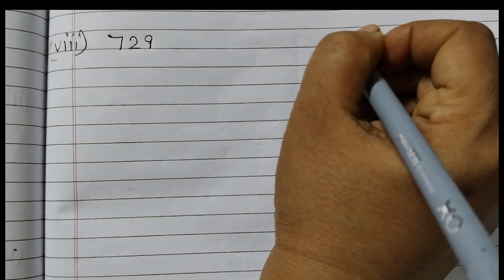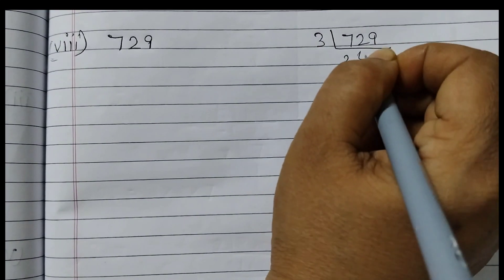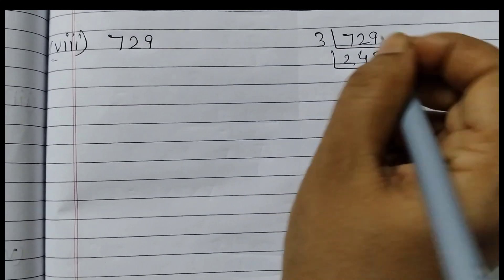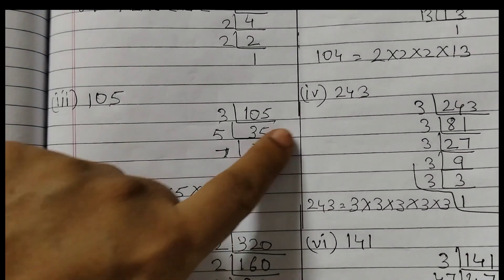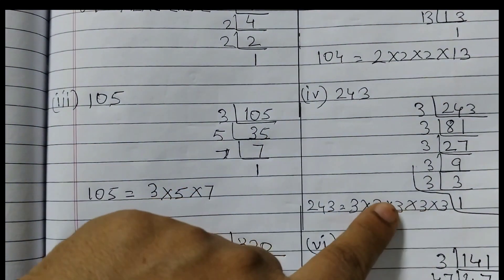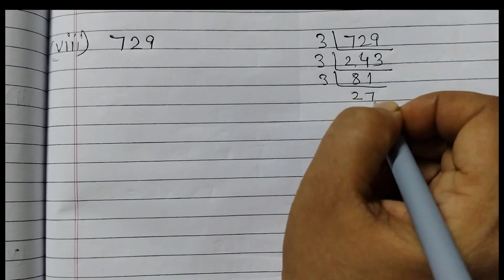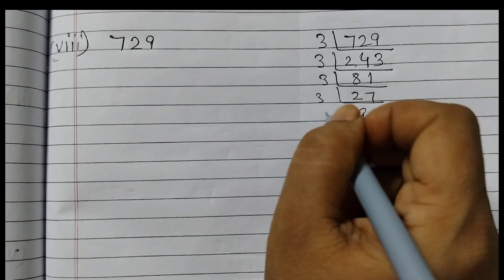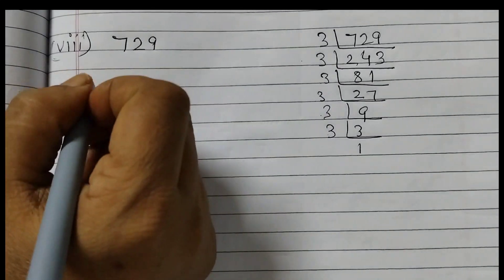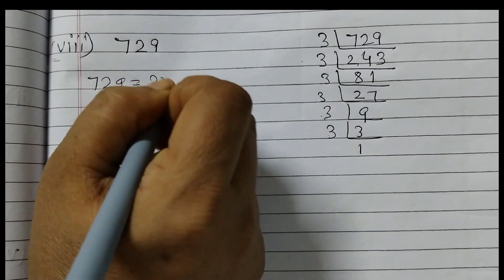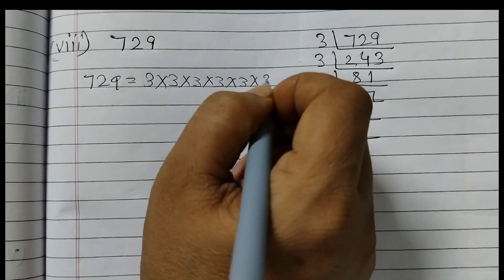Next one is 729. 729 will start with 3. We already did 243 — so 729 ÷ 3 = 243, and then same steps as before: 243 ÷ 3 = 81, 81 ÷ 3 = 27, 27 ÷ 3 = 9, 9 ÷ 3 = 3, 3 ÷ 3 = 1. So 1, 2, 3, 4, 5, 6 — 729 is equal to 3 written 6 times: 3 × 3 × 3 × 3 × 3 × 3.